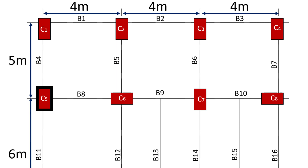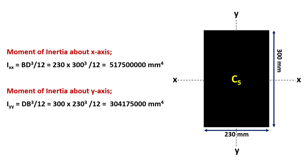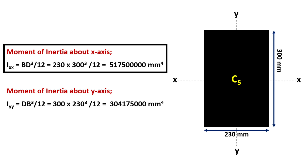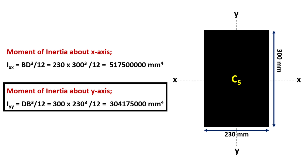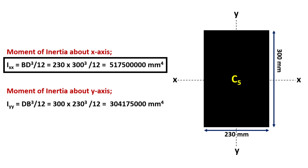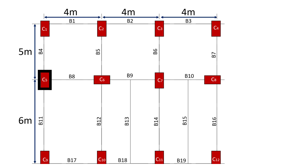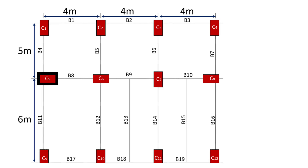Now we need to identify the side having the larger moment of inertia. The moment of inertia about the X axis is given by B·D³/12, where B is 230 mm and D is 300 mm. Again, the moment of inertia about the Y axis will be D·B³/12. As you can see, the moment of inertia about the X axis is greater. Therefore, the major axis of bending will be the X axis. Since the dimension of the column perpendicular to B8 will need to resist a greater moment than the one perpendicular to B4 and B11, the depth of column 5 will be kept perpendicular to the span of B4 and B11. Hence, the assumed orientation of column 5 is wrong and we need to rotate it by 90 degrees.